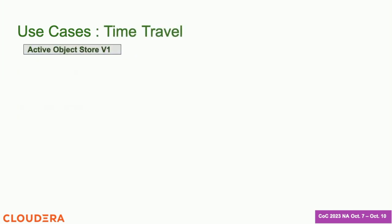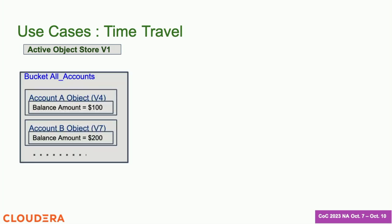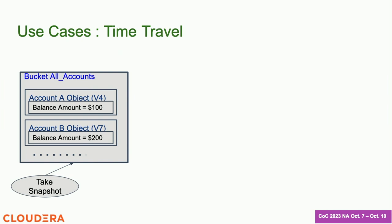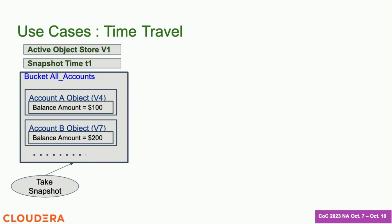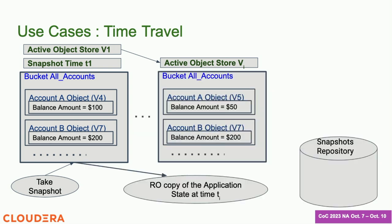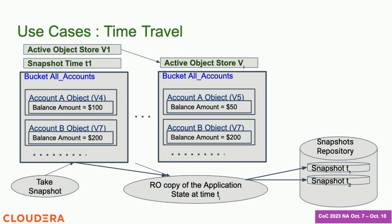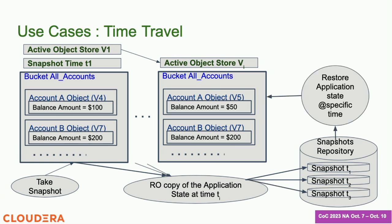One use case that is getting popular nowadays is time travel — I want to go to my application state as of a certain time. Snapshots enable that as well. I take an app-consistent image at time t1, let the active object store move on, and in my snapshot repository I can keep all the snapshots I have taken at different times — all app-consistent images. If I want to do a time travel, I can just restore my application to any specific time for which I have taken an explicit snapshot.